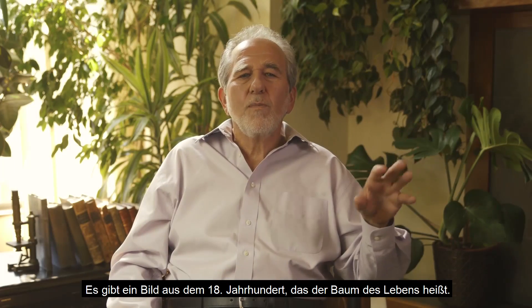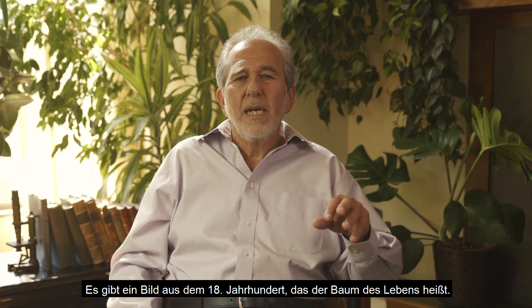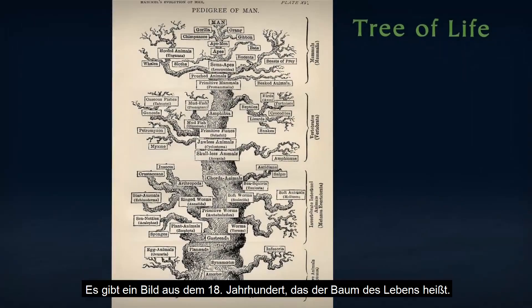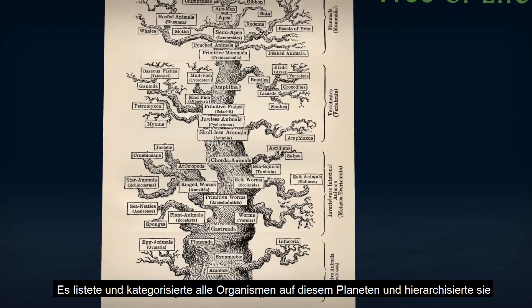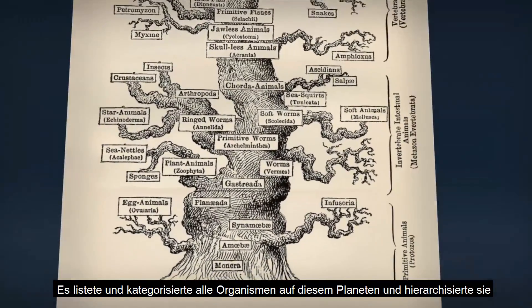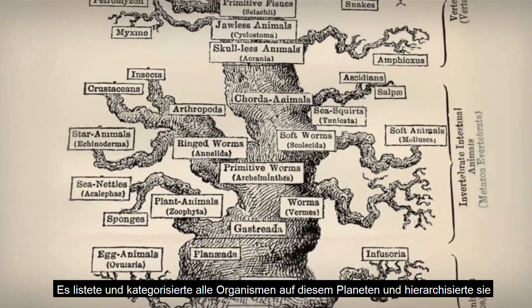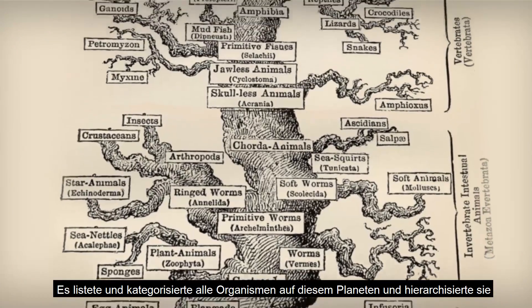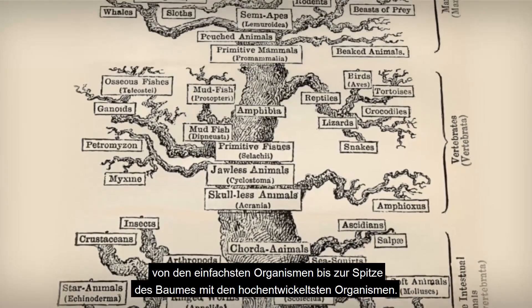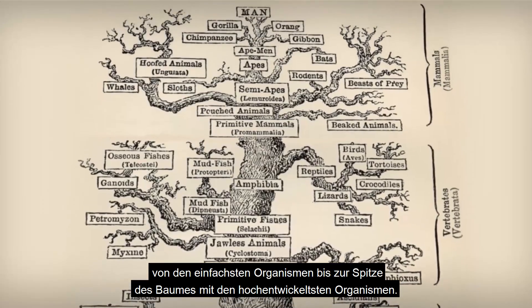There's an old picture from way back in the late 1800s called the Tree of Life. What it did was list and categorize all the organisms on this planet and gave a hierarchy from the simplest organisms to the top of the tree, where the most advanced organisms were.